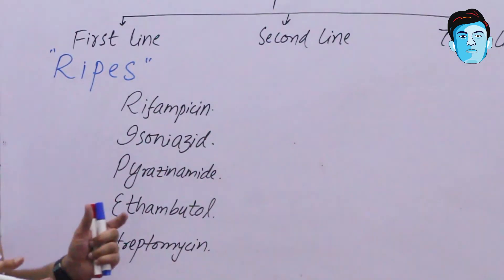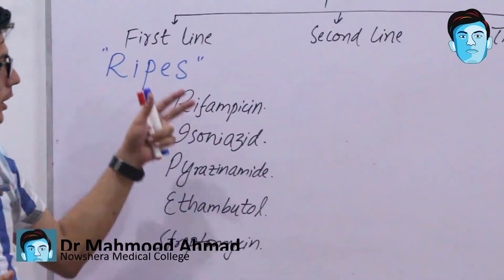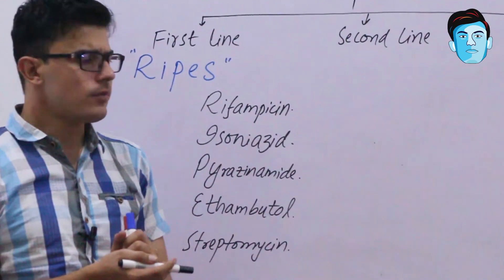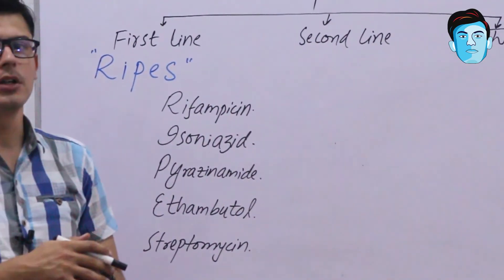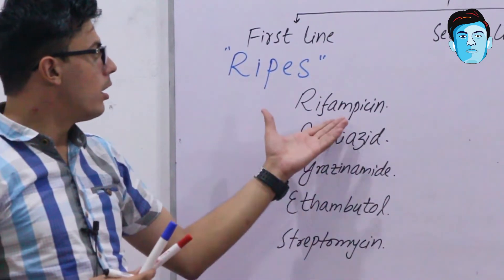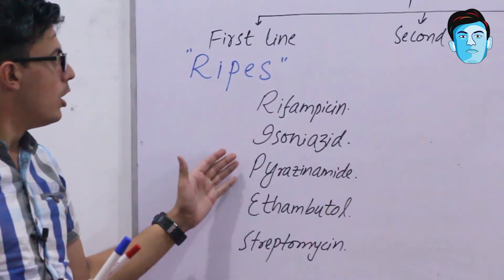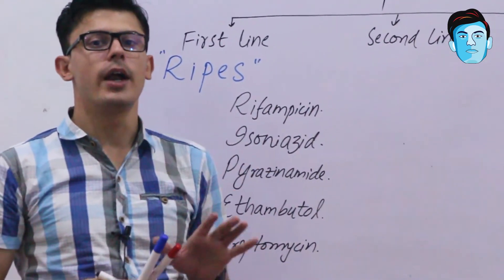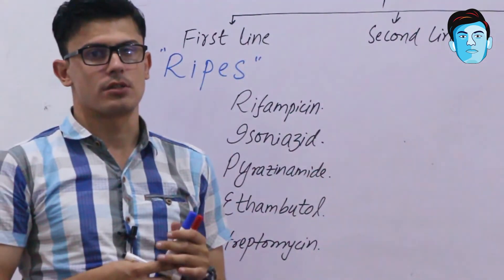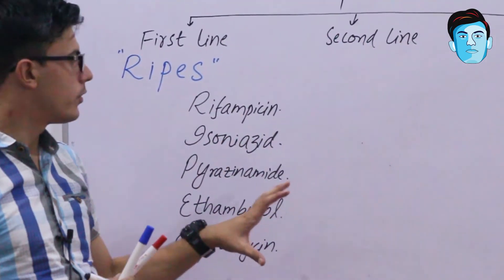It is very important that you have a sound knowledge of certain important side effects for each drug coming under the class of first-line anti-tubercular drugs. Examiners usually ask about the side effects of Rifampicin, Isoniazid, and Pyrazinamide. You need to know at least one side effect for each particular anti-tubercular drug.